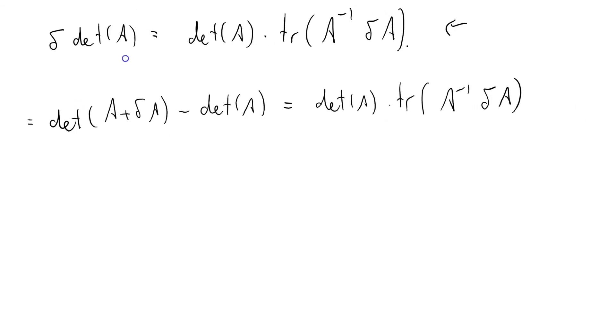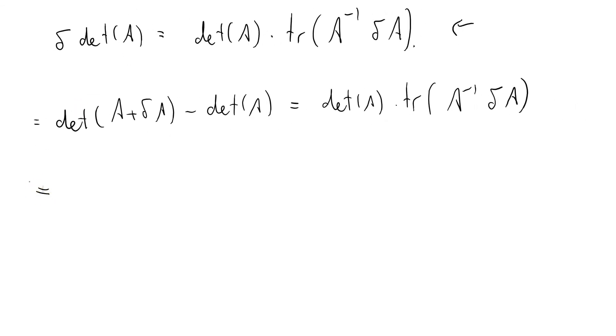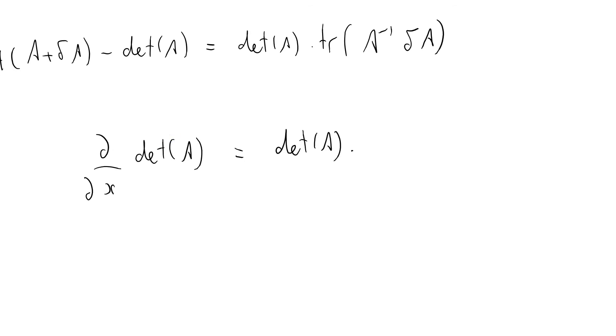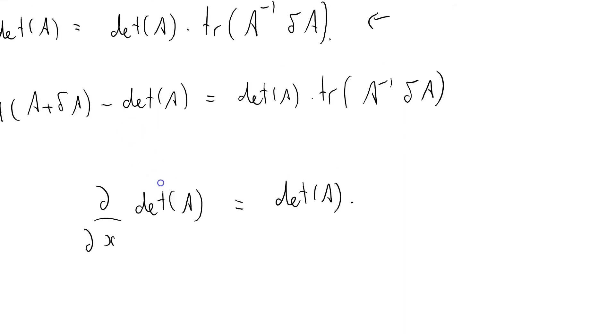Okay, so where does that leave us? So I'm going to rewrite this in a slightly different format. I'm going to say that di by di x of the determinant of A equals, from this formula here, det A times...